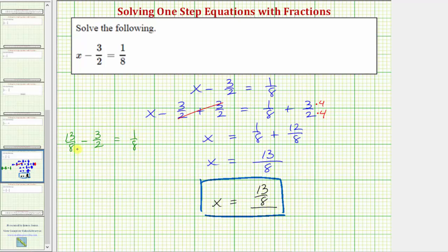Now let's find this difference. The least common denominator again is 8, so we'll multiply the numerator and denominator of 3 halves by 4. So we have 13 eighths minus 12 eighths equals 1 eighth, and 13 eighths minus 12 eighths is 1 eighth. If 1 eighth equals 1 eighth is true, verifying our solution is correct.